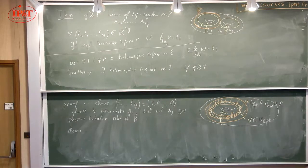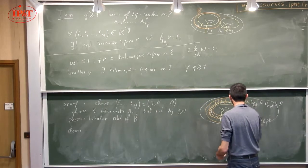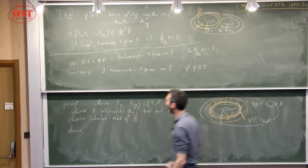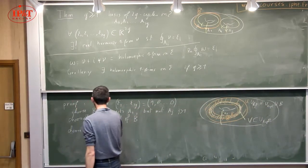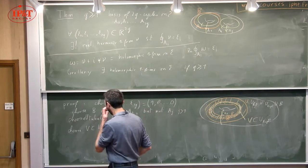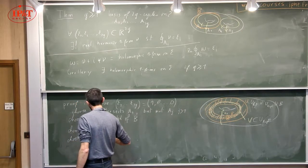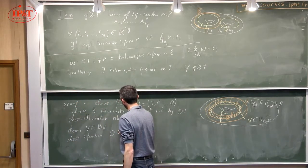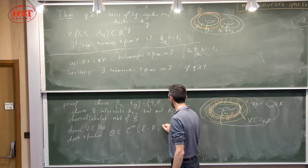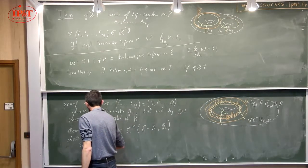When you have forms with simple poles, by taking derivatives with respect to the position of poles you can get forms with arbitrary degree poles. So for any point q in Σ and k ≥ 2, there exists a one-form omega with a pole of degree k at q and no other pole. This proves you can always find meromorphic forms with poles of whatever degree, wherever you want.